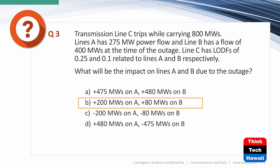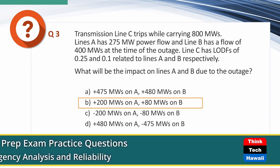The impact is 200 and 80 megawatts. Notice that 475 and 480 are also given as a detractor — representing the final flows, not the impact. That would be wrong for impact. Answer D — negative 475 and 480 — implies flows in the opposite direction, which makes no sense at all. Power flows on the path of least resistance; line A clearly has lower impedance than B since it carries more flow.